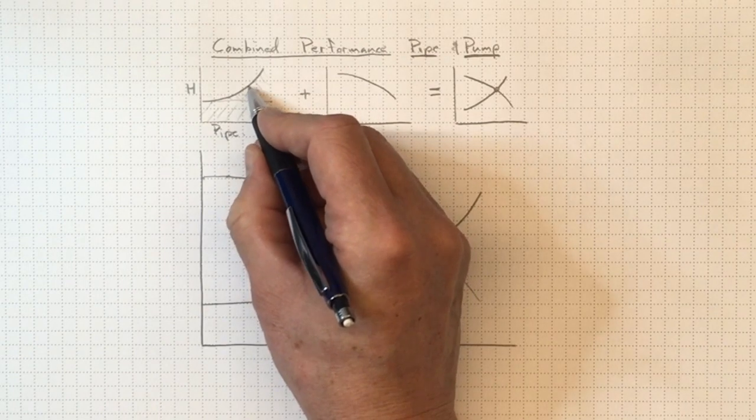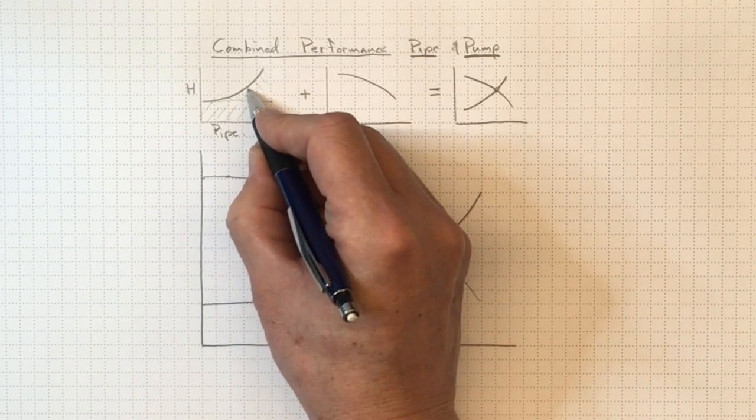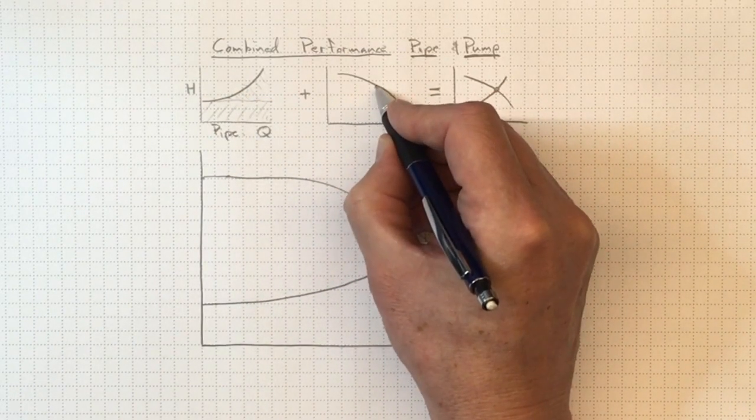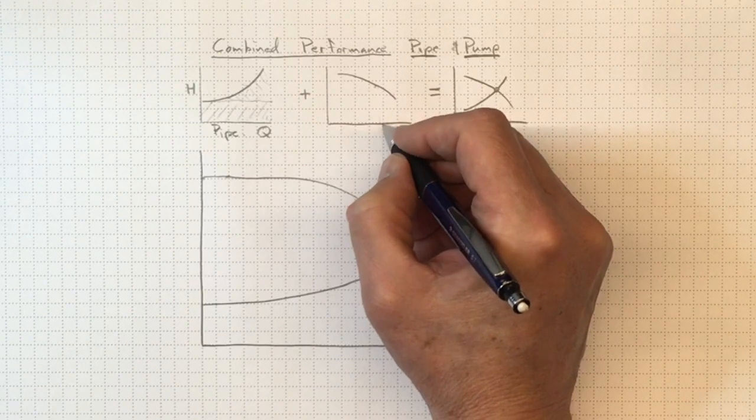Now based on what we wanted to accomplish with this pipe, we knew that we wanted to get this flow at this head. We went and selected a pump that was large enough to be able to deliver that capability.